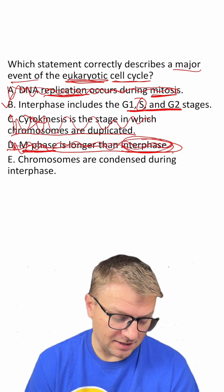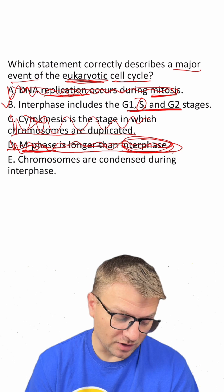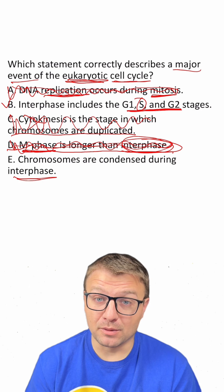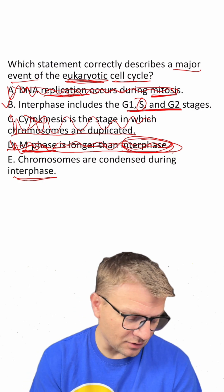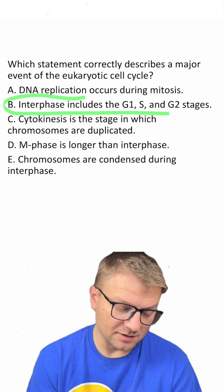And E, chromosomes are condensed during interphase. That's a major misconception. During interphase, they're not condensed. They're unwound. And that's because the cell needs to be able to read them and duplicate them. So E is not the right answer. This is why B here is the right choice.